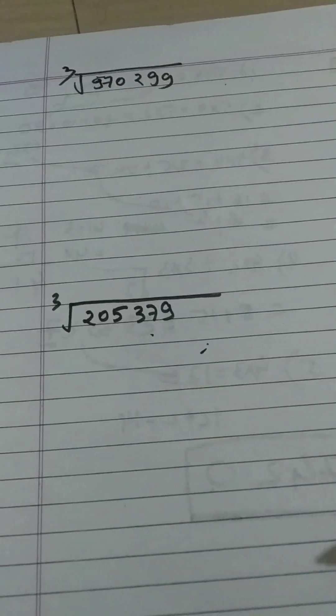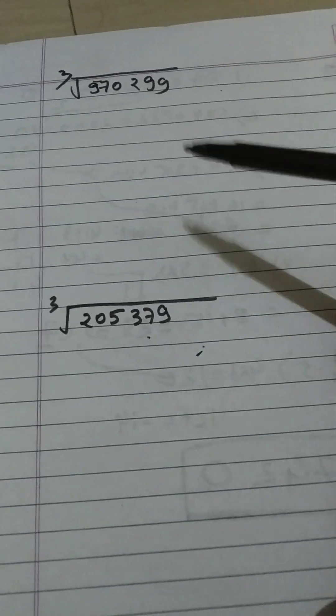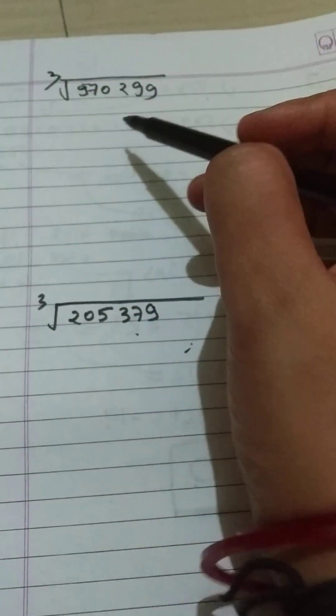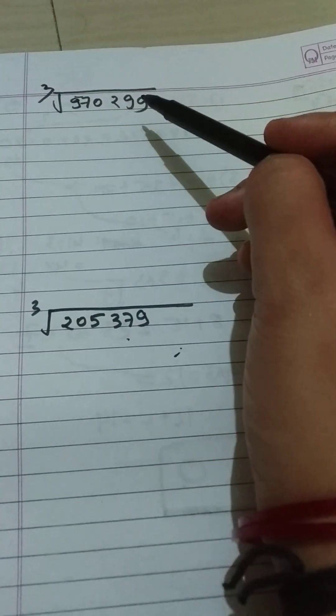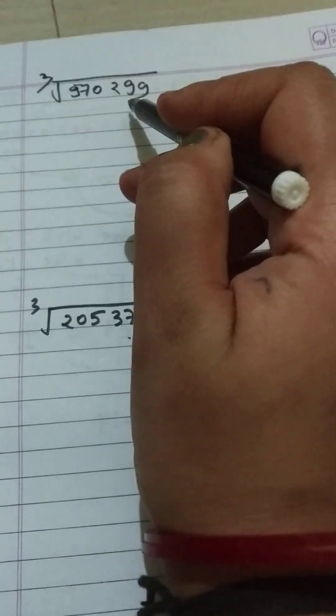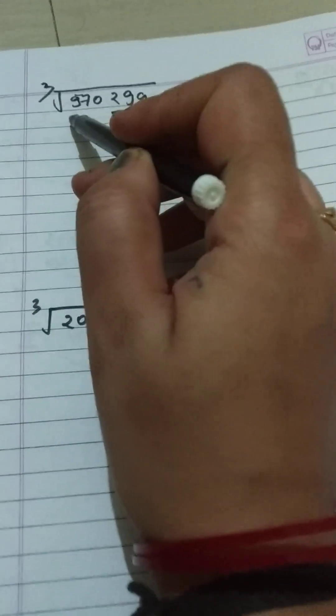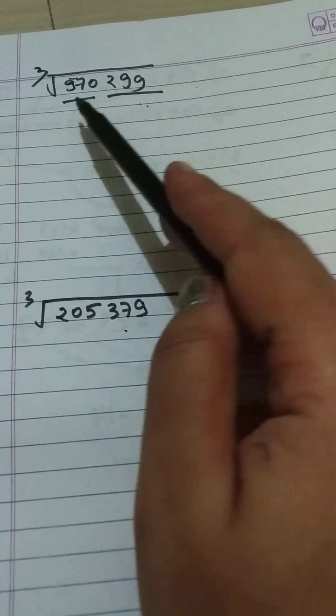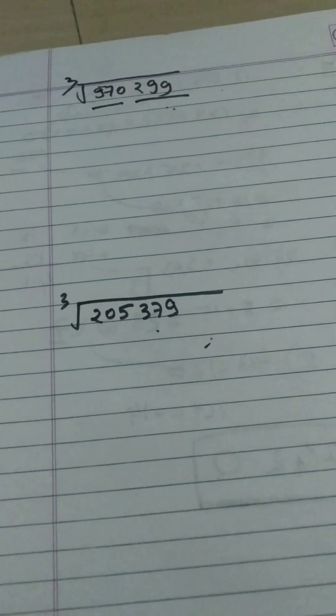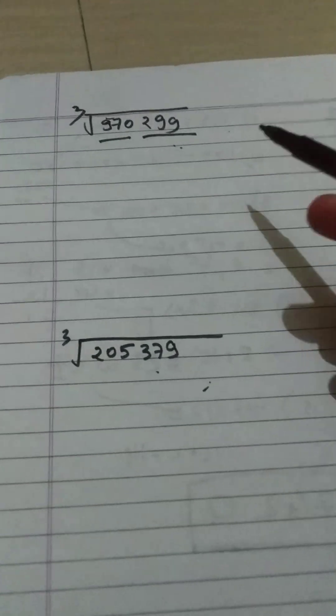We will find the perfect cube root. What we will do - as we know this is a six-digit number and this is a perfect cube, so we have to find cube root of this. We will divide the six-digit number into two pairs, that is pair of three and three. So this is 299 as one pair, 970 as another pair.